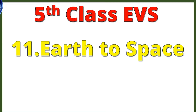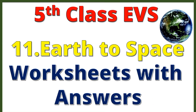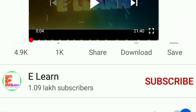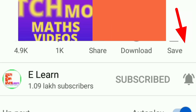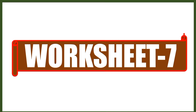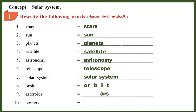5th Class EVS 11th Chapter: Earth to Space - Worksheets with Answers. Worksheet 7 Concept: Solar System. Section 1 - Rewrite the following words: Stars, Sun, Planets, Satellite, Astronomy, Telescope, Solar System, Orbit, Asteroids.